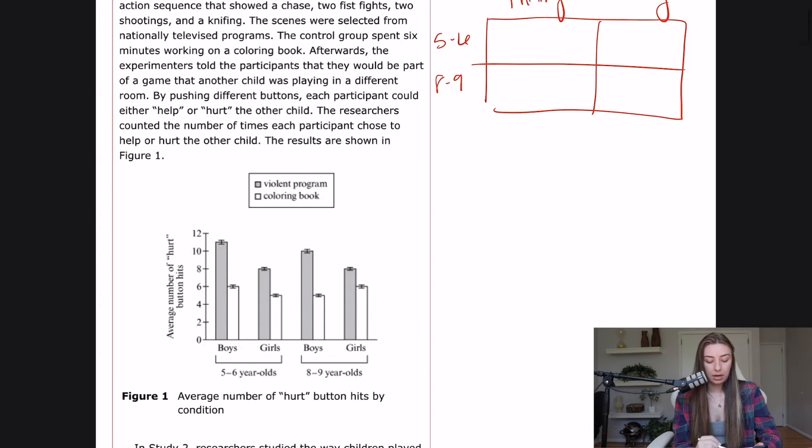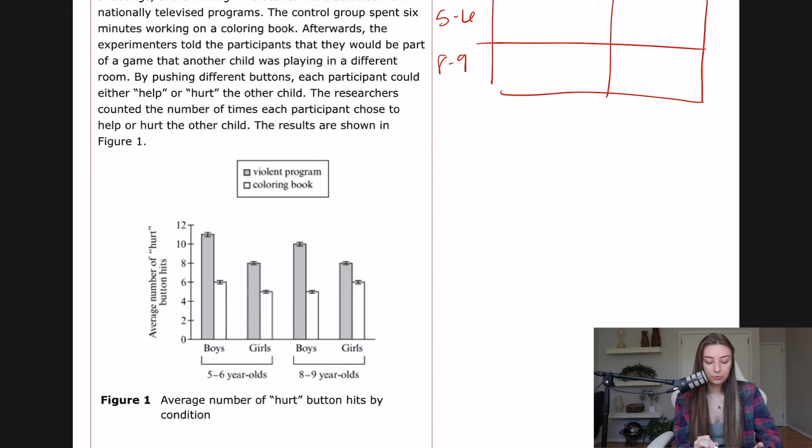So let's do a little bit of figure interpretation. Figure one, always start out with the caption, average number of hurt button hits by condition. And then we kind of got our groups up here in the key. It looks like the gray is the violent program and across the board, they have more average number of hurt button hits. So they are hurting the other children in the game more often. It looks like the hypothesis is going to be supported here that violence exposure kind of has immediate effects on how violent kids are towards other kids. We also see that the researchers have broken it down into boys versus girls within these eight and nine year old groups. So we've gone from four groups now to eight different groups. So looking at this figure, from a big picture standpoint, I see that there's just a huge difference between the violent program versus the coloring book groups, and the average number of hurt button hits that they had. So that's my main takeaway.